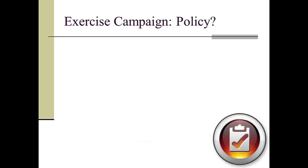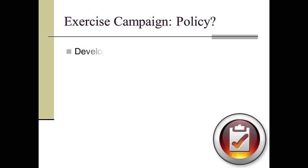The next exercise campaign question to answer is what kinds of public policy might be addressed through public outreach — what would we like to see our governmental bodies do? The city and county could help to develop safe walking and biking paths, and large government employers could provide flex time at work so employees could take mid-day or early morning exercise breaks.